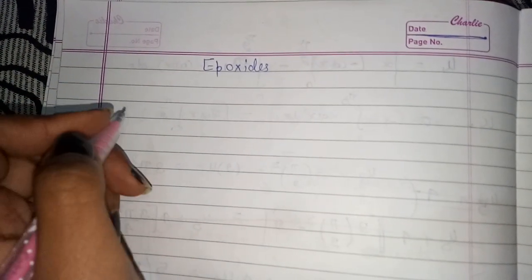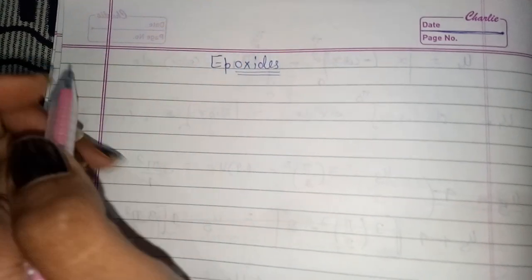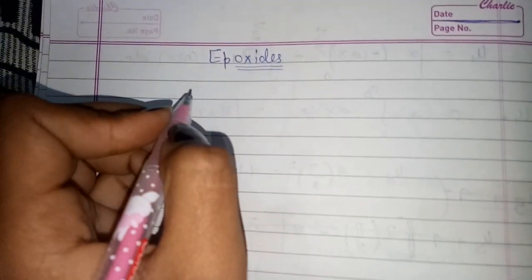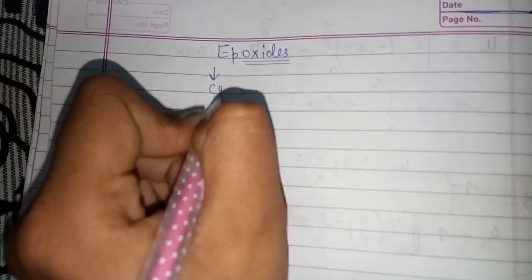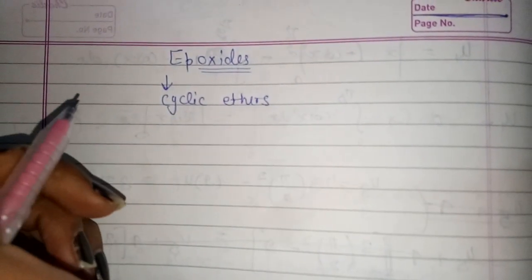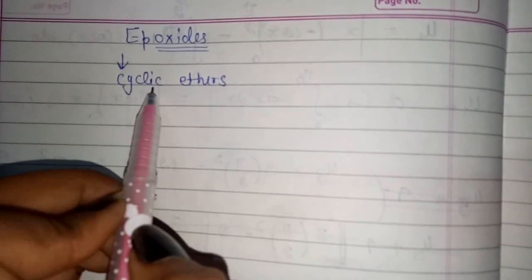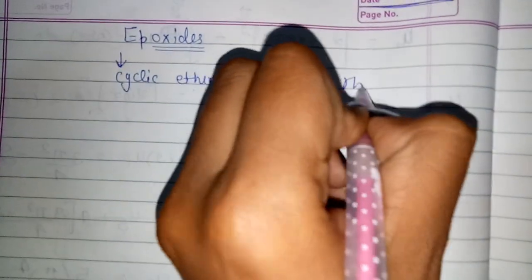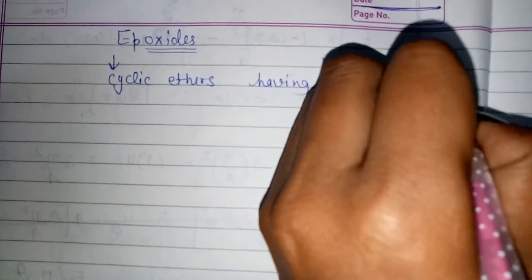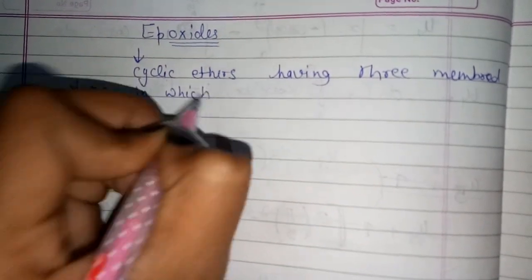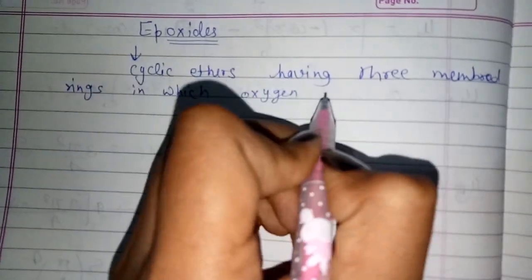Hello guys, welcome to my channel. Today we will study about epoxides. First of all, I will introduce what an epoxide is. Epoxides are cyclic ethers having three-membered rings in which oxygen is one of the atoms.